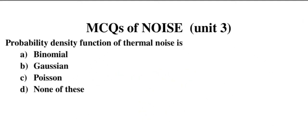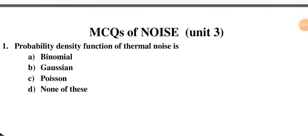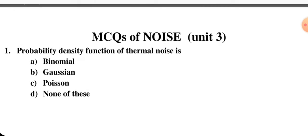In this video lecture on Communication Engineering, I am going to discuss MCQs of Unit 3. I will cover noise, de-emphasis, pre-emphasis — some questions are already covered in previous units. The first question: the probability density function (PDF) of thermal noise is — binomial, Gaussian, Poisson, or none of these. The correct answer is Gaussian, so B is the correct option.